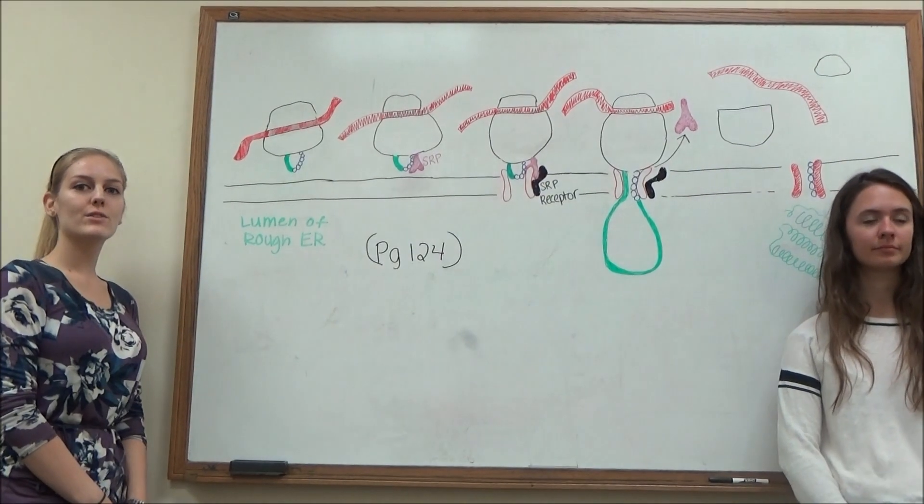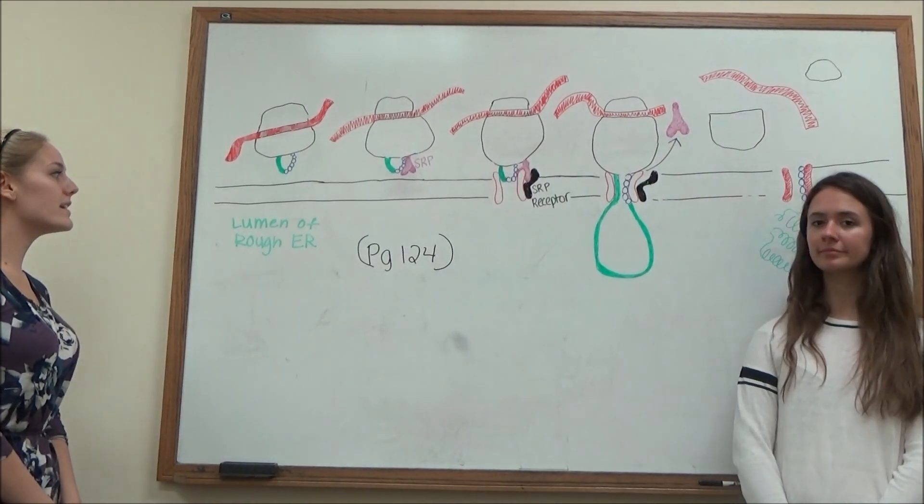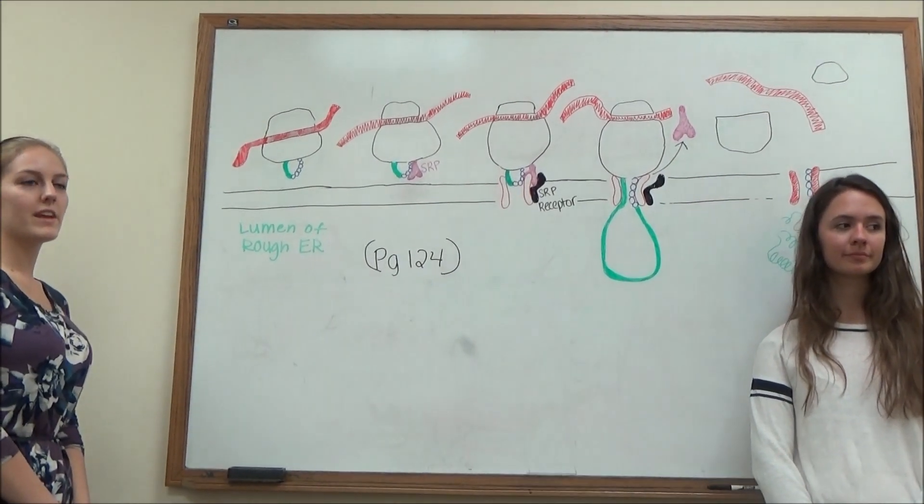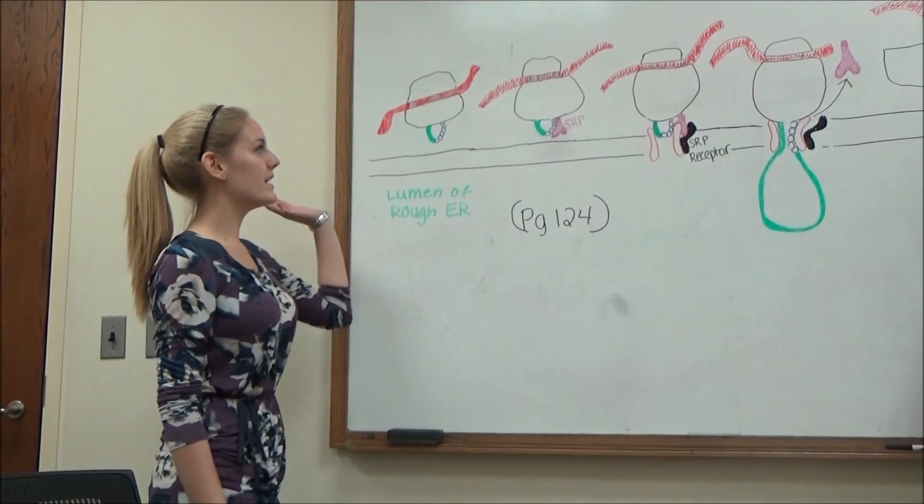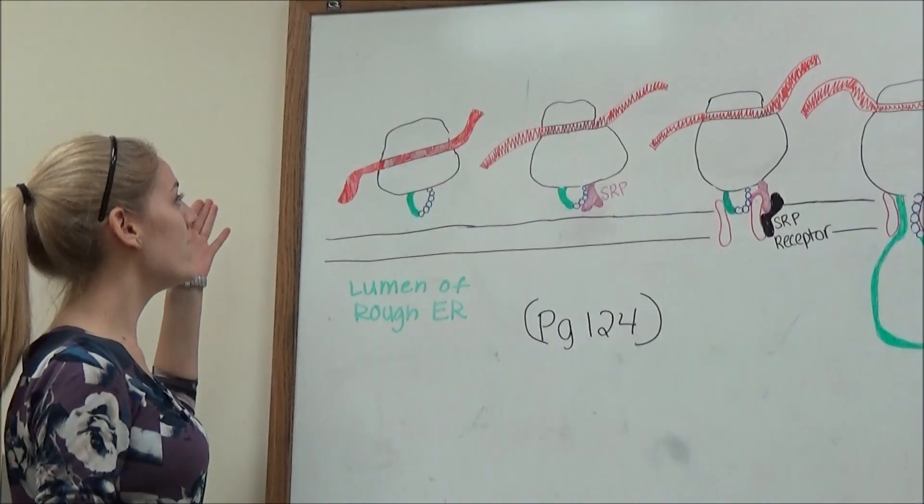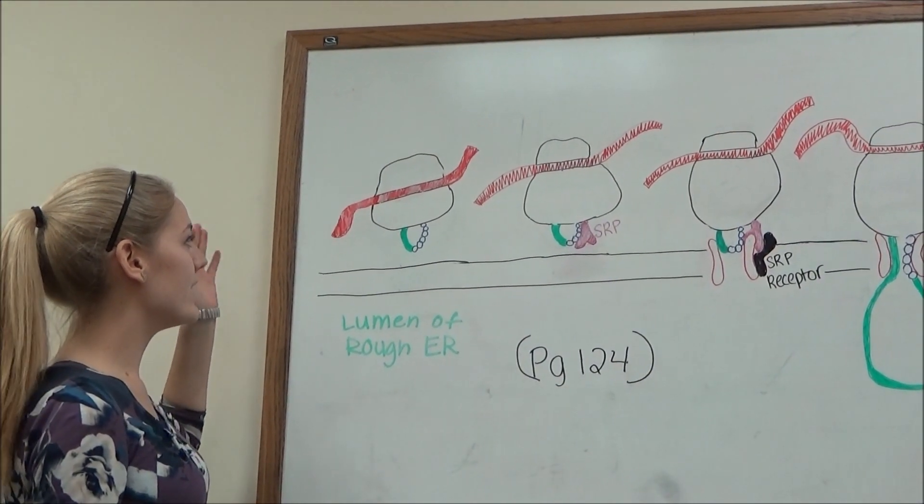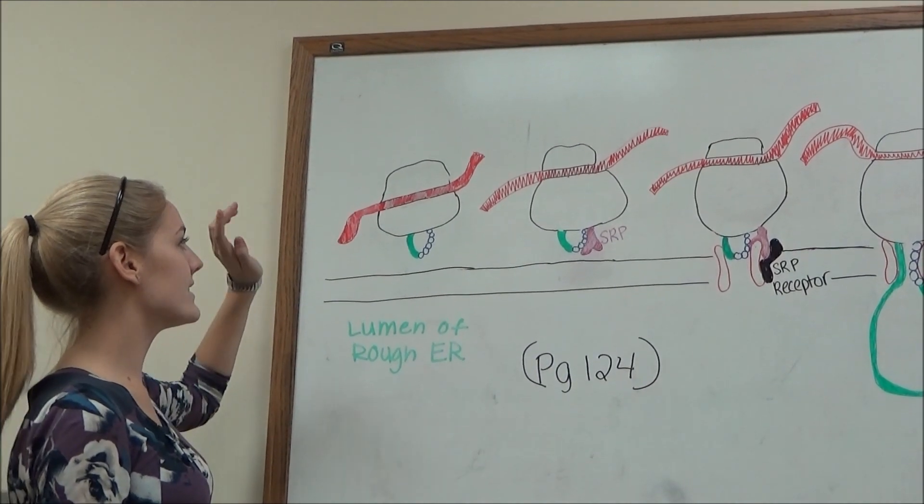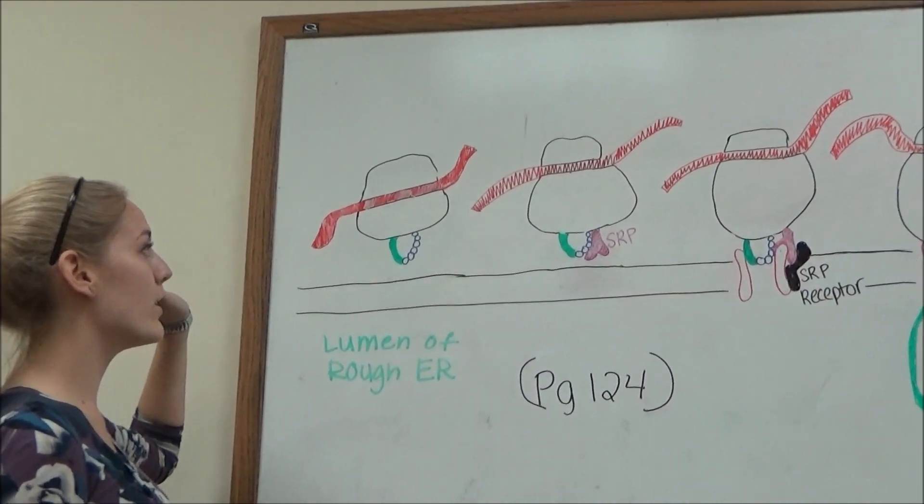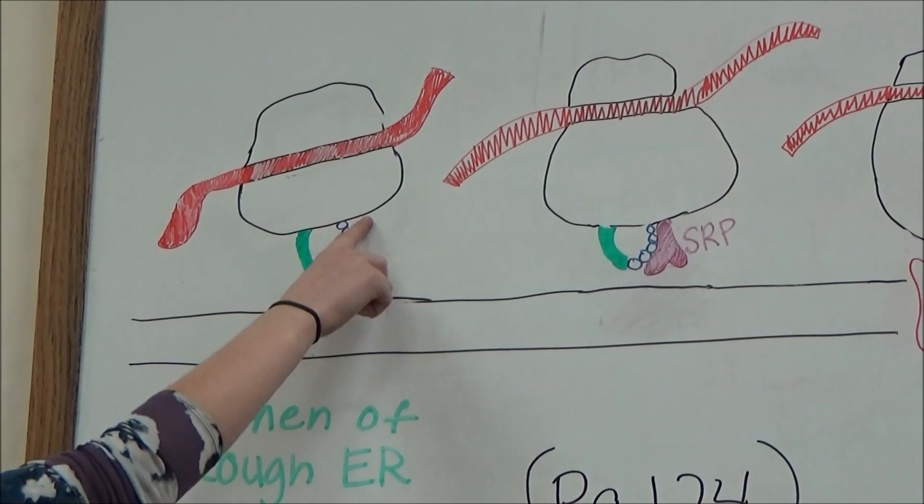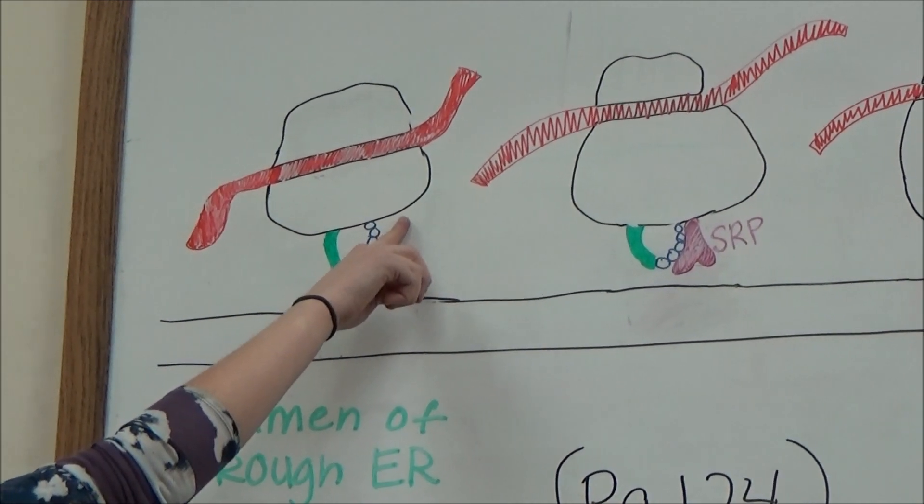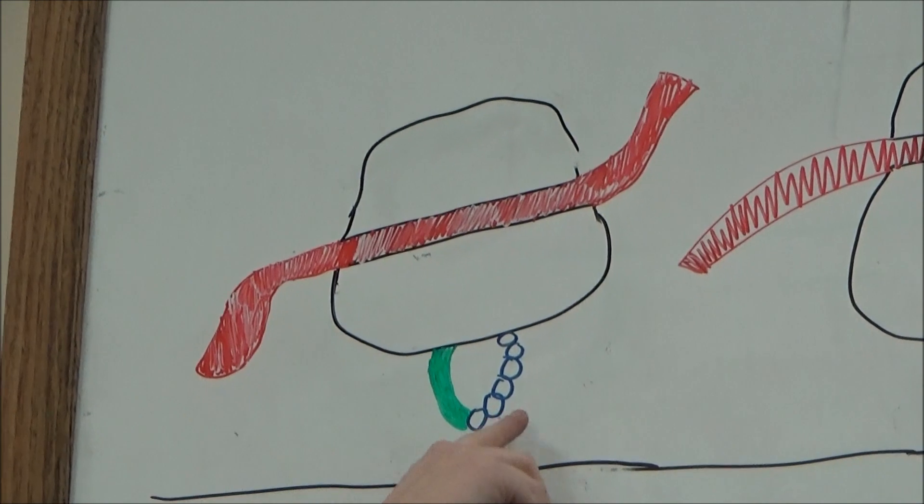Okay, so to further explain how the protein is translated into the rough ER at the beginning of the endomembrane system, we can see here we have a ribosome. At the beginning, first, it translates the signal sequence, which is these first couple of polypeptides that you see here.